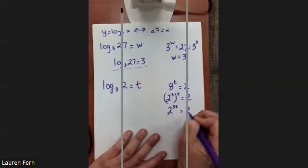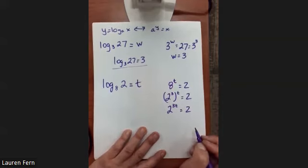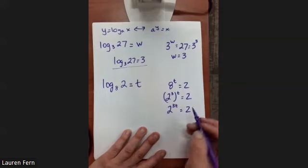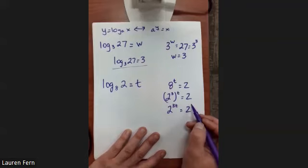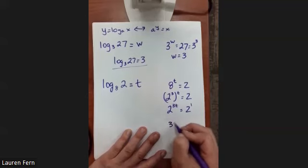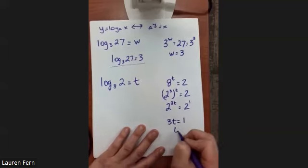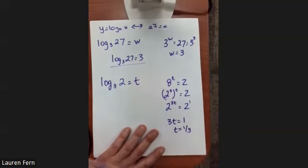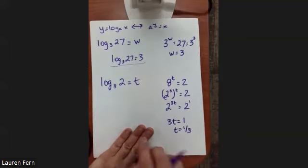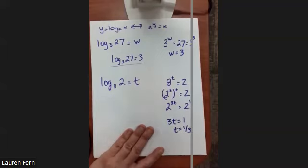Multiply the exponents: 3T = 1, so T = 1/3. And the cube root of 8 is indeed 2.